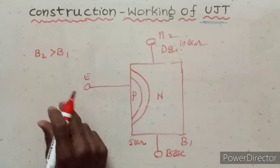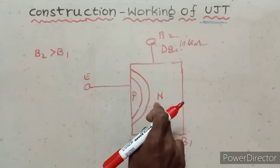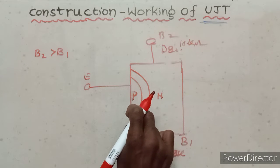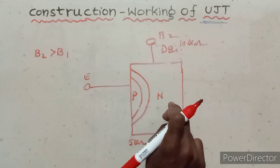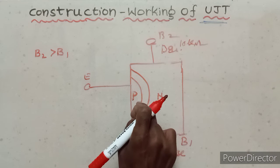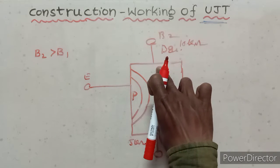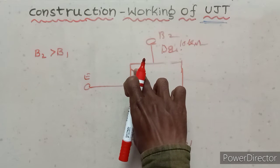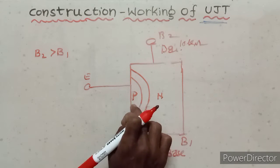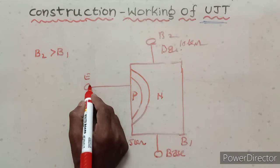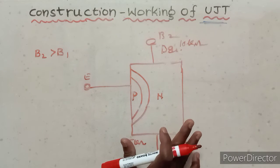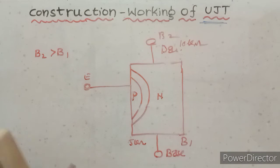The p-n junction is formed with a heavily doped p-type semiconductor. The p-type semiconductor is heavily doped and the n-type semiconductor is lightly doped. The p-type insert is placed near the middle of the n-type silicon bar. This p-region is called the emitter and is formed by connecting an aluminum wire. This completes the construction of UJT.